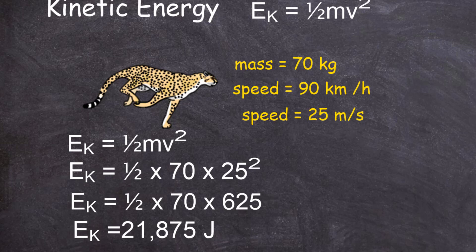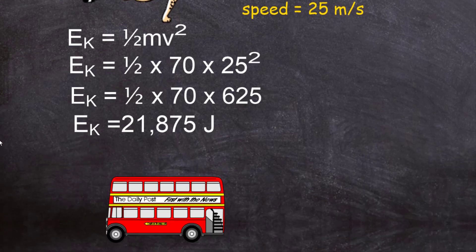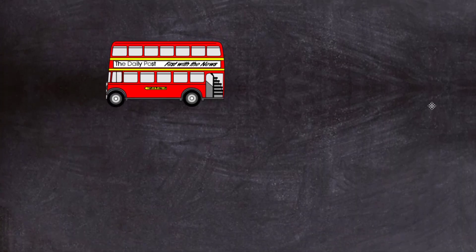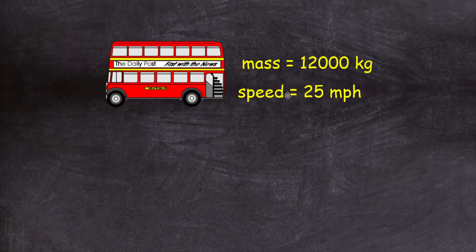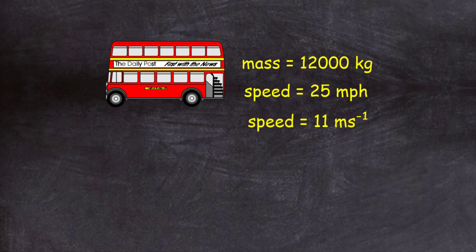Now let's look at a much more common example. We don't often get chased by cheetahs, but we do see double-decker buses coming through town. A double-decker bus has a mass of 12,000 kilograms and a speed of 25 miles per hour. Once again, we can't use miles per hour — we have to convert that into metres per second. We find that 25 miles per hour is 11 metres per second.